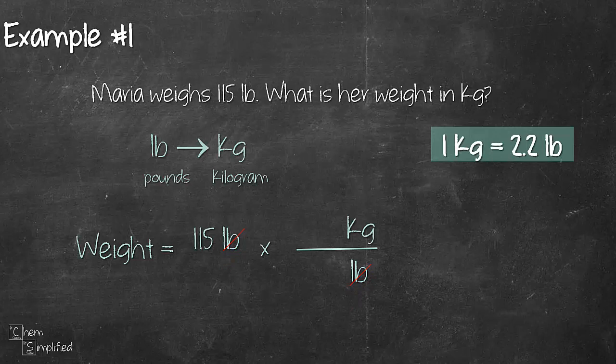Then next what we'll do is we'll place in the numbers. So we'll place in 1 in front of kg and 2.2 in front of pounds. Now let's do the math. So we have 115 multiplied by 1 divided by 2.2. That whole thing will give us 52.3 kg. Don't forget to include the unit in your final answer.